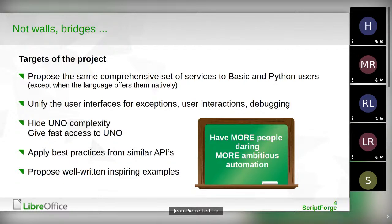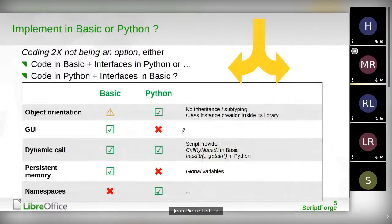An important word on this slide is 'automation' — we are speaking about repeatable things. It's important to know when we design methods that we focus on automation of repeatable things. In the beginning, we had the question: should we implement the API in Basic or in Python?